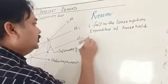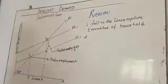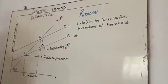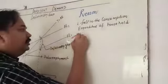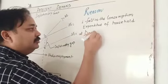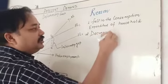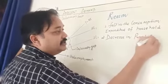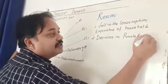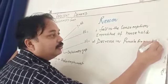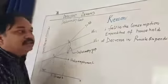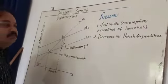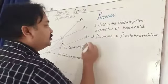Next is the private expenditure. The private expenditure is going to decrease. Private expenditure means that firms, factories, or industries are not going to invest in this situation, because the supply is more than what is going to be consumed.